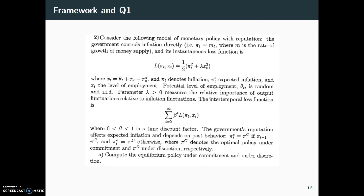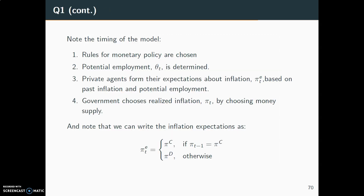The first thing we have to do is compute equilibrium policy under commitment and under discretion respectively. It's very important to be aware of the timing in the model. The first step basically applies to commitment: if the authorities follow a commitment rule, the way that inflation depends on potential employment is determined here — the monetary policy rule is determined before observing the actual potential employment, and this is announced to the public at this stage.